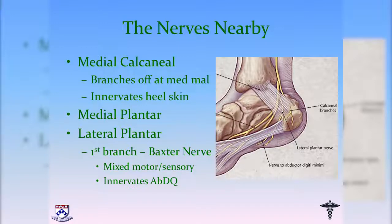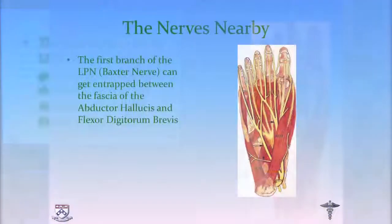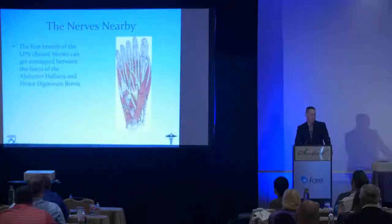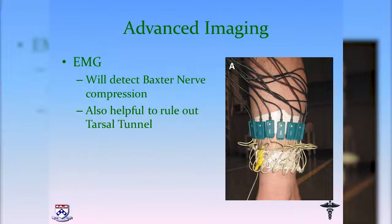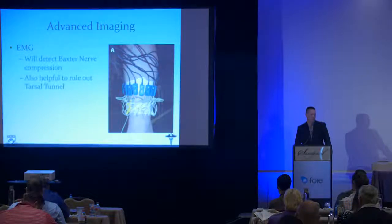Briefly on the nearby nerves: the medial calcaneal branch innervates the heel skin; there are medial plantar and lateral plantar nerves; and the first branch of the lateral plantar is Baxter's nerve, which has mixed motor and sensory function. Baxter's nerve can get entrapped between the fascia of the abductor hallucis and the FDB. If a nerve issue is suspected, EMG and nerve conduction studies are important to detect tarsal tunnel and assess the lateral and medial calcaneal branches.